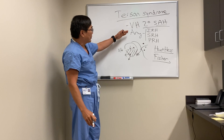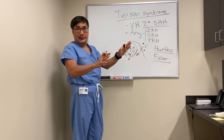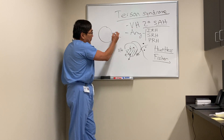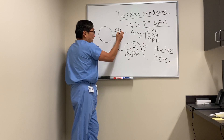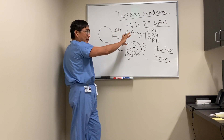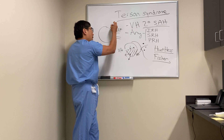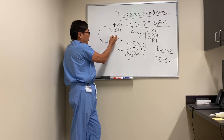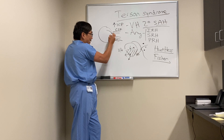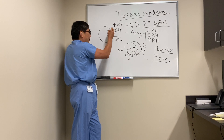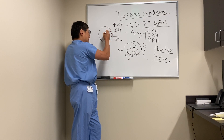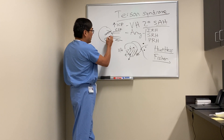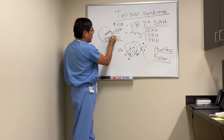In addition to documenting Terson syndrome, it's also important to understand the pathogenesis of the hemorrhage. The optic nerve sheath contains cerebrospinal fluid and is in direct continuity with the intracranial cavity. When there is a rapid rise in intracranial pressure, that pressure is transmitted down the CSF to the optic nerve head, and small capillaries either on the disc itself or in the retina can break, leading to formation of a vitreous hemorrhage, a preretinal boat-shaped hemorrhage, or an intraretinal hemorrhage.